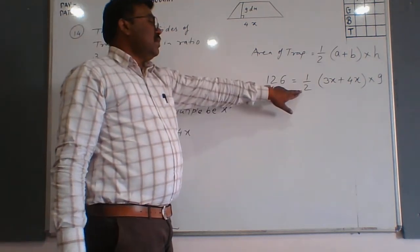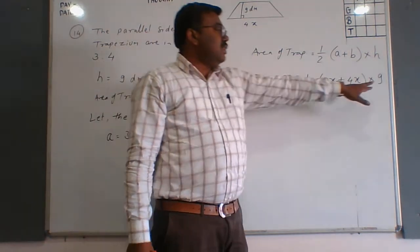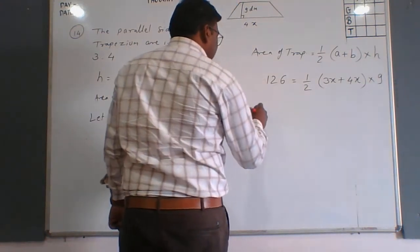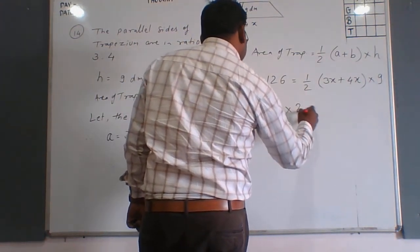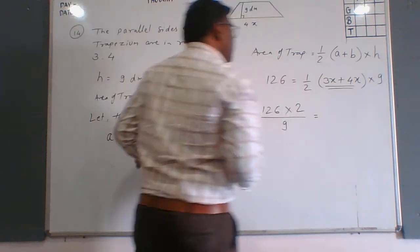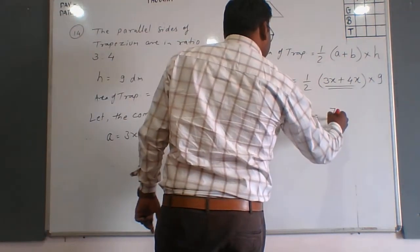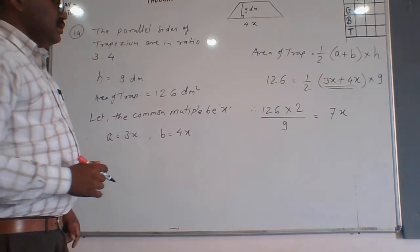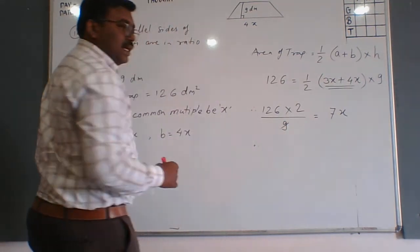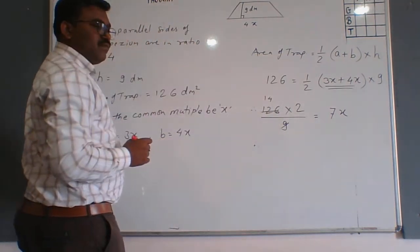The 2 goes to the other side as multiplication and the 9 goes to the other side as division. So we write 126 multiplied by 2 upon 9, which equals 3x plus 4x. So 3x plus 4x will be 7x.